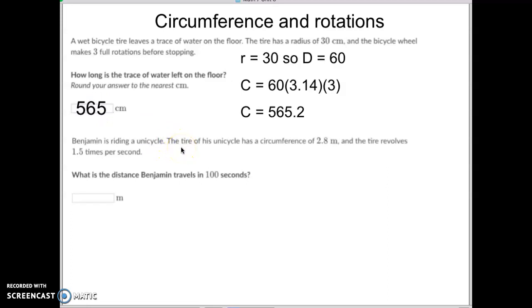Let's try this one. Benjamin is riding a unicycle. The tire of the unicycle has a circumference of 2.8 meters. Hey guys, they just told you the circumference. Okay. You don't need to do any calculations for the circumference. How nice is that for this one?